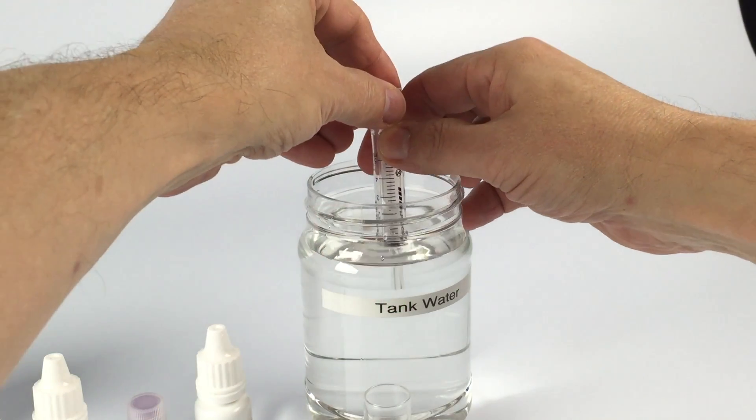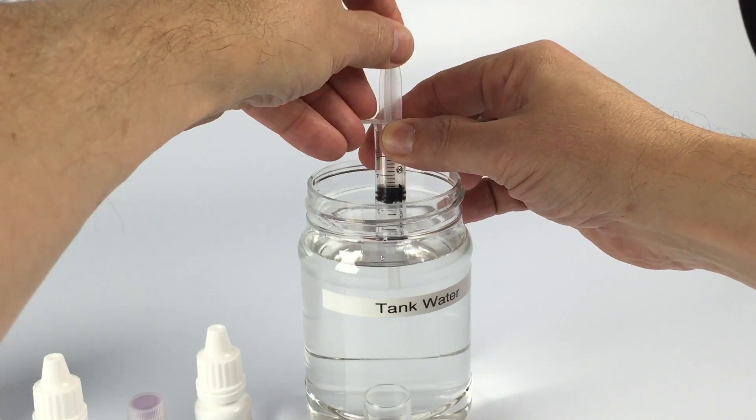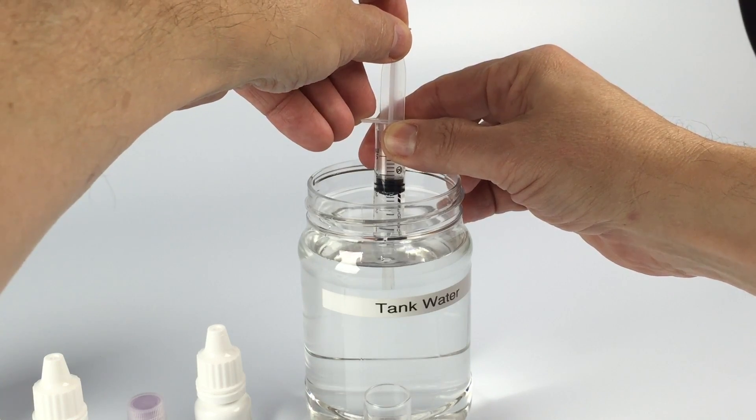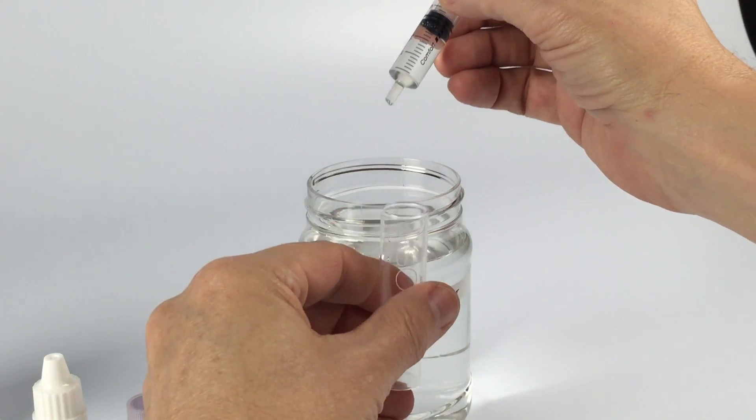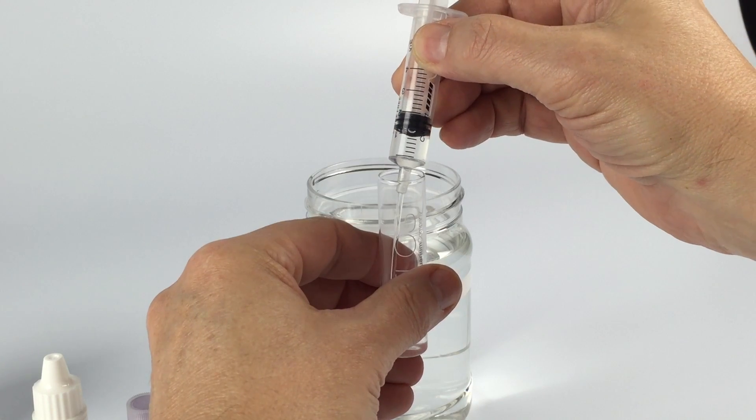You need exactly 3 milliliters of tank water for this test and this is the first stage. Push out all the air from your syringe, then draw up 3 milliliters and add that to the test vial.